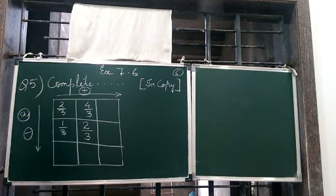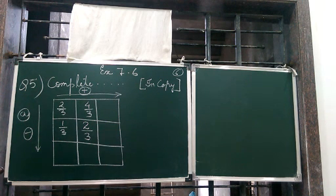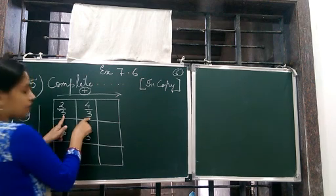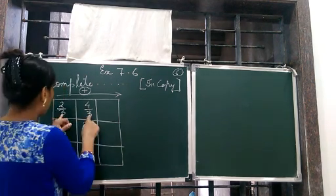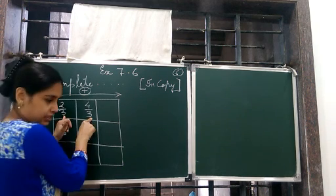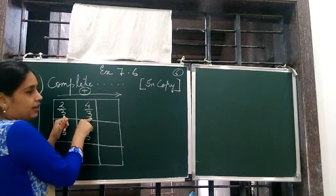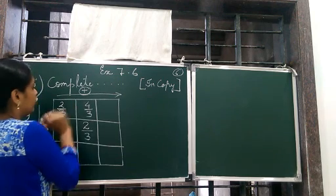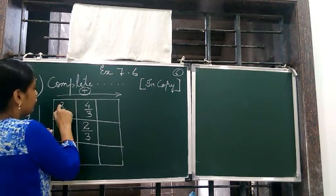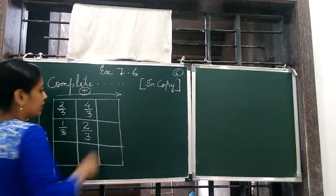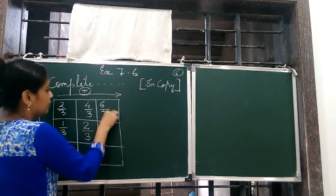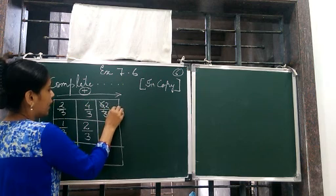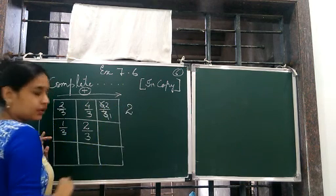For adding fractions, the first thing we do is check the denominators. Are the denominators same here? Yes, the denominators are same. That means we can simply add the numerators. So this is 2 and 4 — 2 plus 4 gives us 6 by 3. Now 3 and 6 can get cancelled, so the answer is 2.